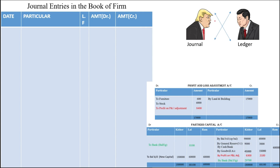Now we will start with the partner's capital. Opening and closing entries do not have a journal entry, so we will ignore them. Now we will move to the general reserve. The ledger says write the credit sign, but while passing the journal entry, we write the debit sign — general reserve account debit. The total is 12,000, which is already given in your question in the old balance sheet.